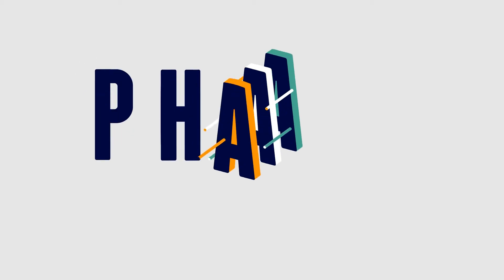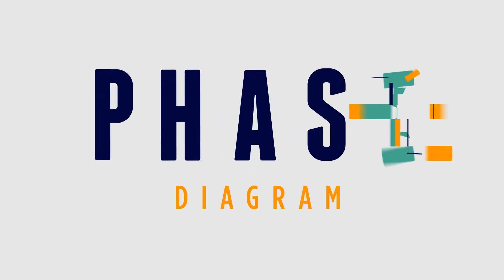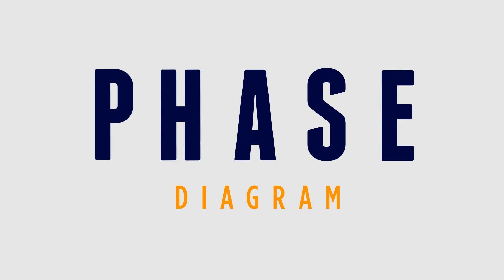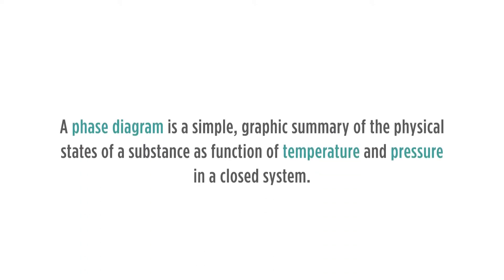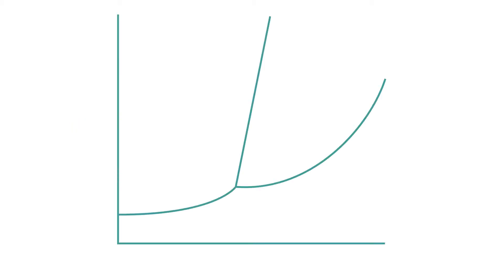In this video we'll look at phase diagrams. A phase diagram is a simple graphic summary of the physical states of a substance as a function of the temperature and pressure in a closed system. This is a representation of a phase diagram.